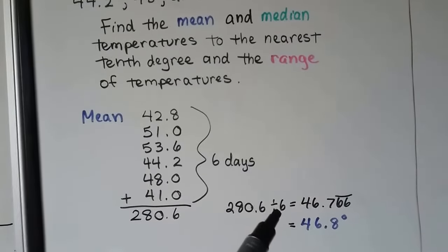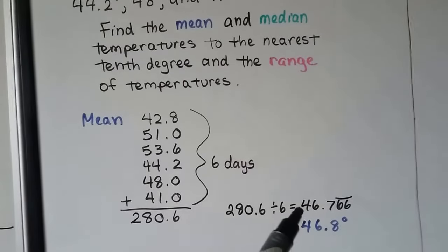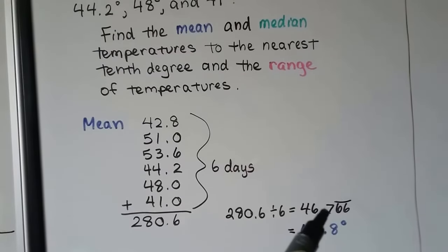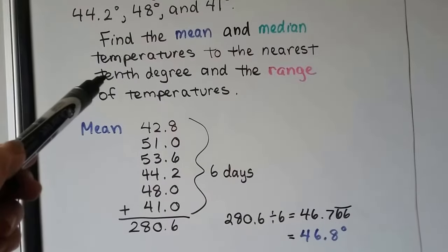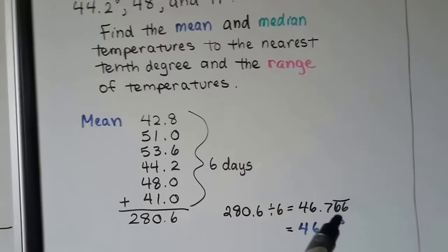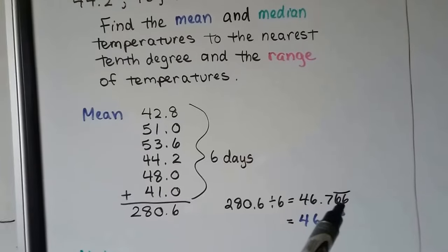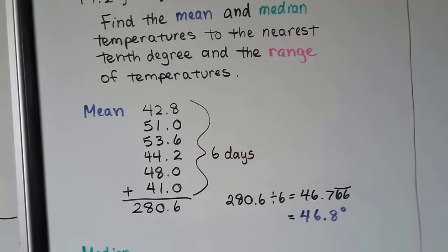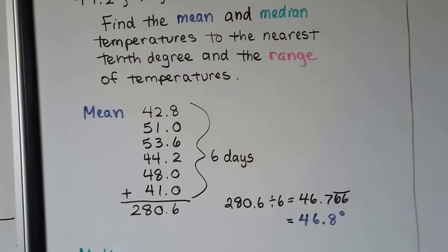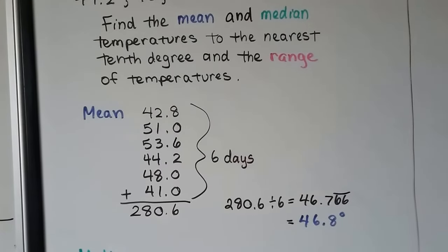We get 46.766 and the six repeated, but it says to find it to the nearest tenth degree. And that six is in the hundredth place. That six tells the seven to go up. So we have 46.8 degrees when we round it to the nearest tenth.